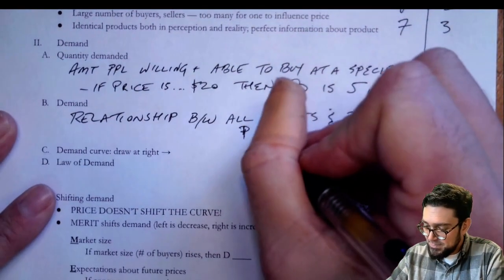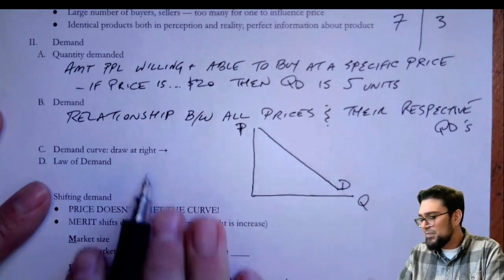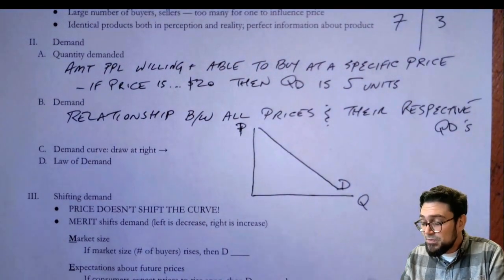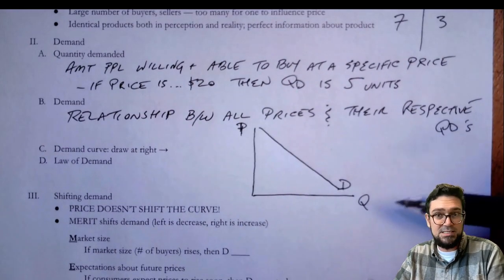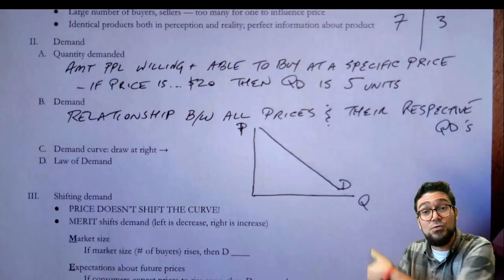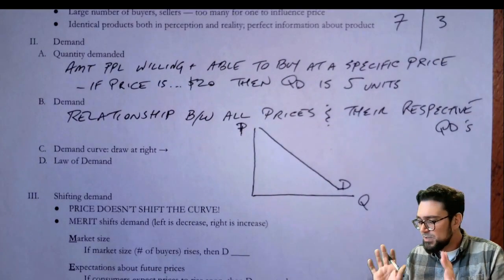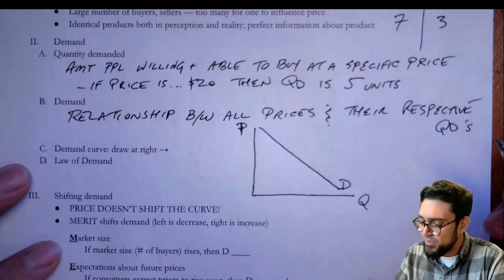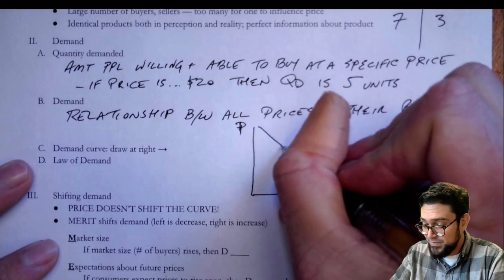Demand is always going to be downward sloping. Sometimes we'll break that rule and say demand might look a little different, but for our initial picture, demand is downward sloping — it goes down toward the x-axis and doesn't curve back upward. So this downward sloping curve is what we call the demand curve.